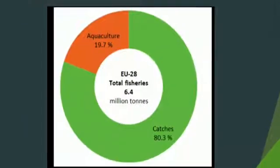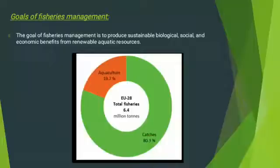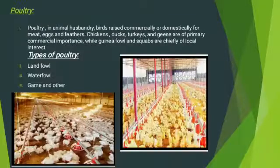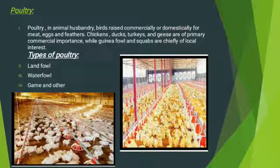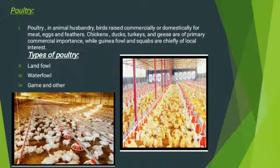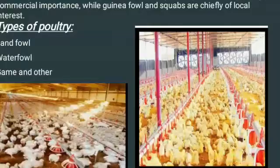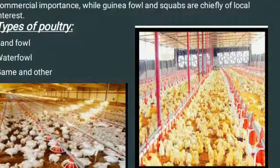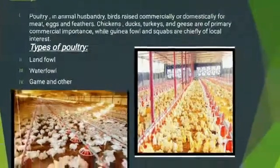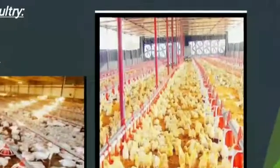The next basic concept is poultry. In animal husbandry, poultry refers to birds raised commercially or domestically for meat, eggs, and feathers. A graph of fisheries management goals is also shown here. Types of poultry include landfowl, waterfowl, and game birds.